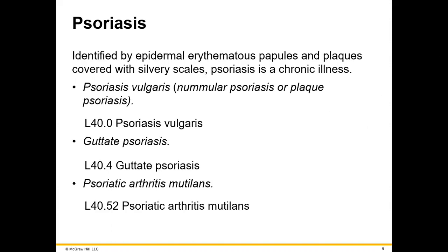Psoriasis is a type of epidermal condition involving papules and plaques — basically this kind of silvery, scaly type of effect. Psoriasis is a chronic illness. We can have psoriasis vulgaris, and other terms you'll see include psoriatic arthritis and mutilans, and so on. You can see these all in the L40 category. Please keep reading after you see the main term of psoriasis.